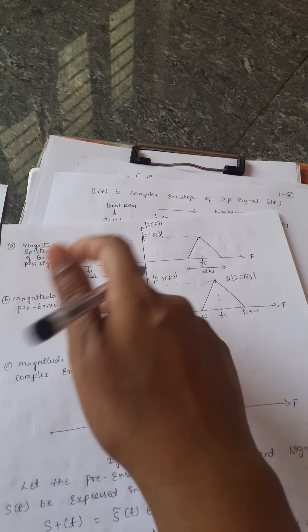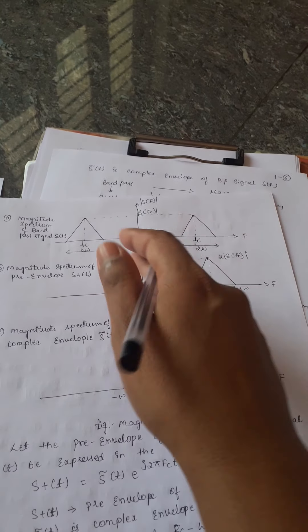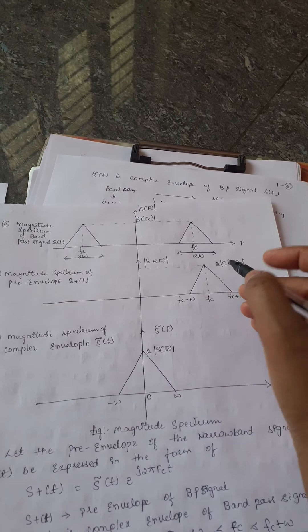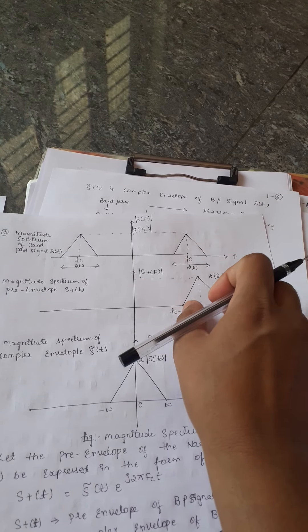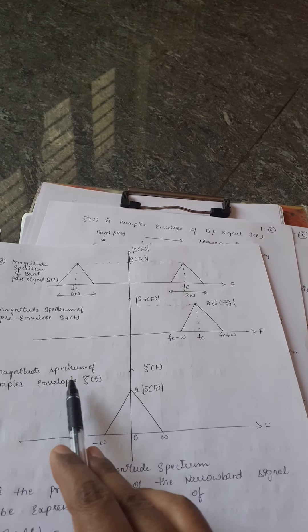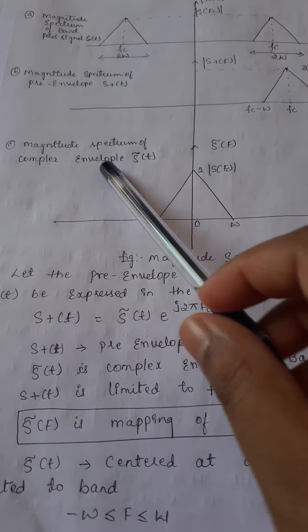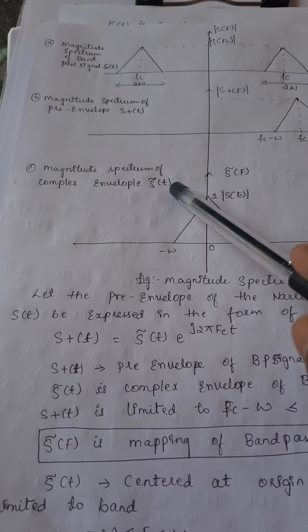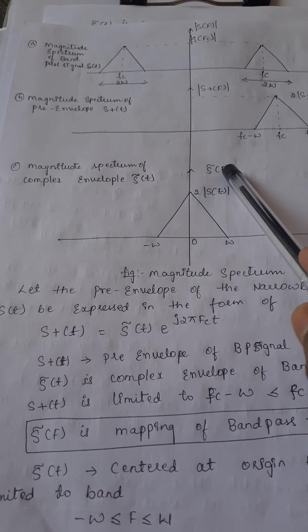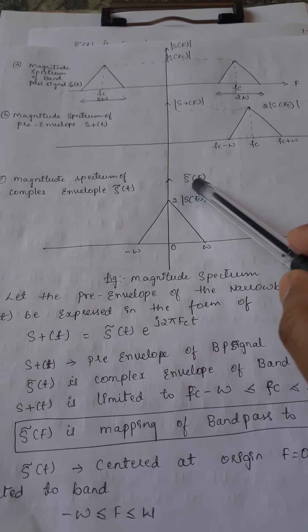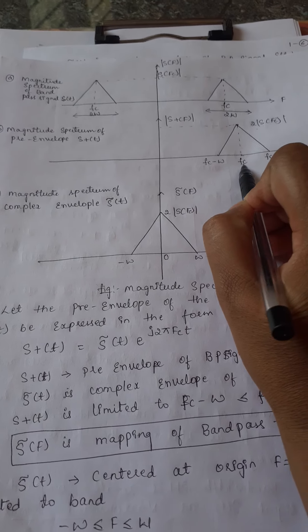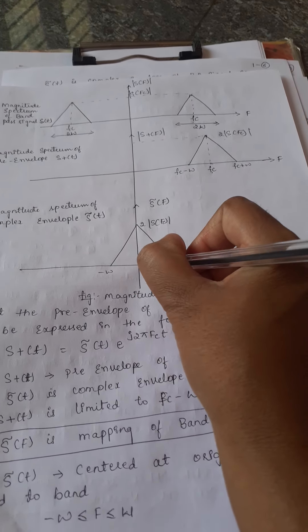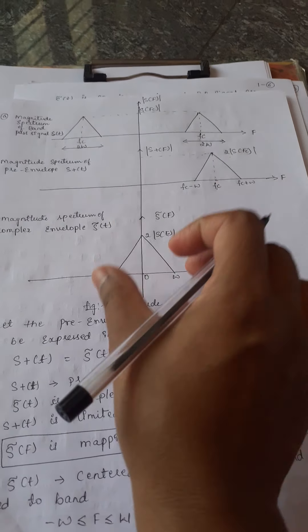The magnitude spectrum of the pre-envelope, S⁺(T), gives us 2·S(F) only for positive frequencies. The magnitude spectrum of the complex envelope signal S̃(T) — if we apply the Fourier transform, we get S̃(F) in the spectrum. For the pre-envelope signal the center frequency is FC, whereas for the complex envelope signal the center frequency is shifted to zero.